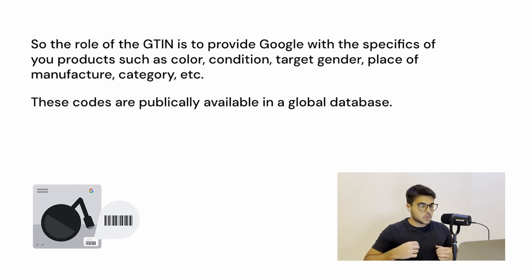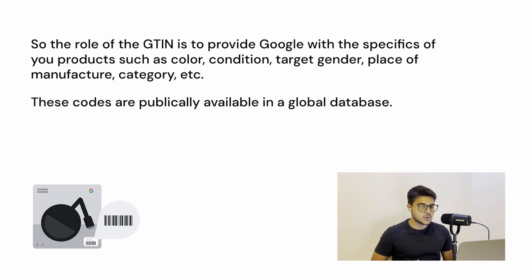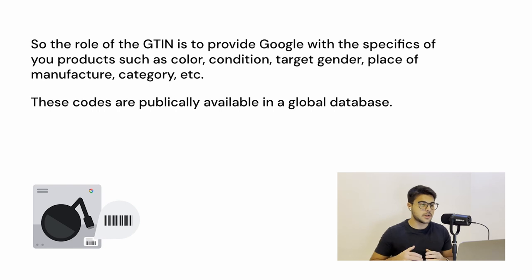The role of the GTIN code is to provide Google with the specifics of your products, such as color, condition, target gender, place of manufacture, category, and more.